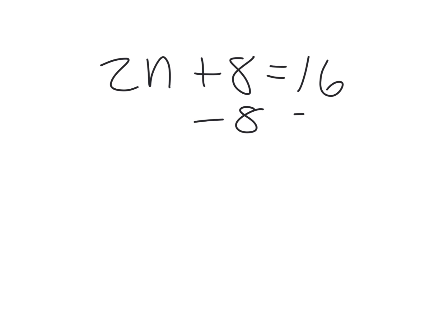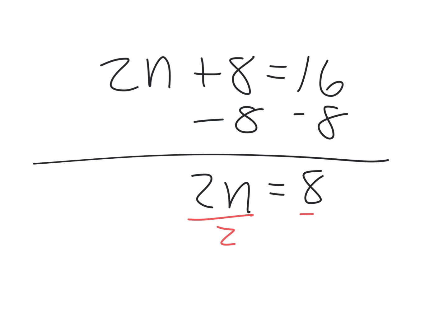We're going to start with minus 8 and minus 8. Just like on the AP tests, on the free response part, you get one point for the answer, and then all the rest of the points are for the work. So show your work. Then the next step is divide by 2, divide by 2, and then n equals 4.